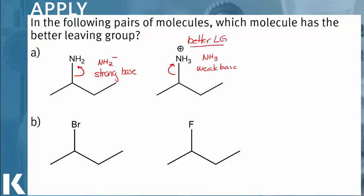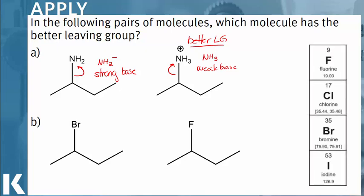Now let's take a look at example B. Here we're comparing bromine and fluorine. Let's take a look at the periodic table. Bromine is located towards the bottom of the periodic table. Fluorine is located towards the top. Leaving group stability will increase down the periodic table. So since bromine is under fluorine in the periodic table, its larger atomic radius means that it is a better leaving group.